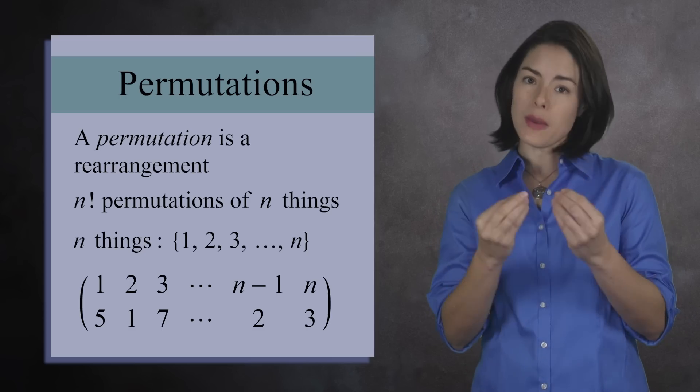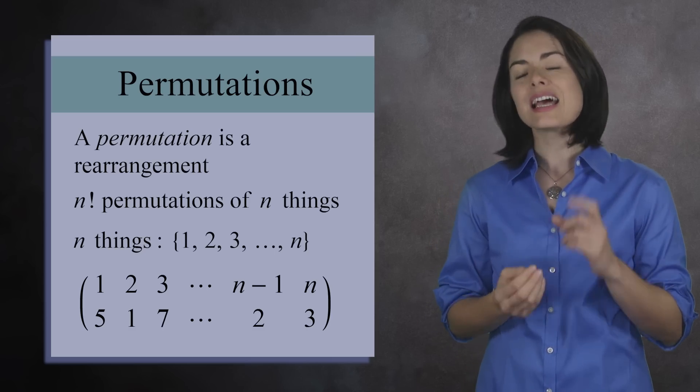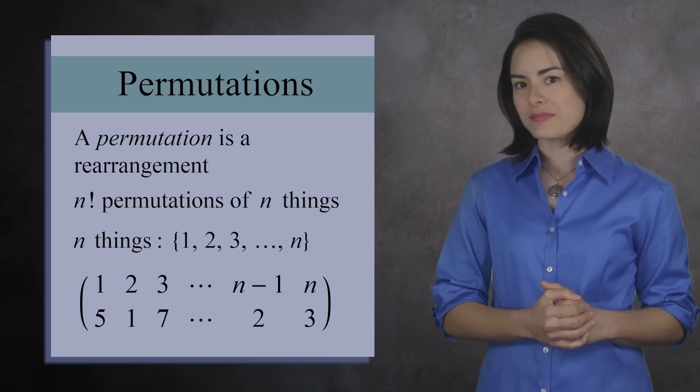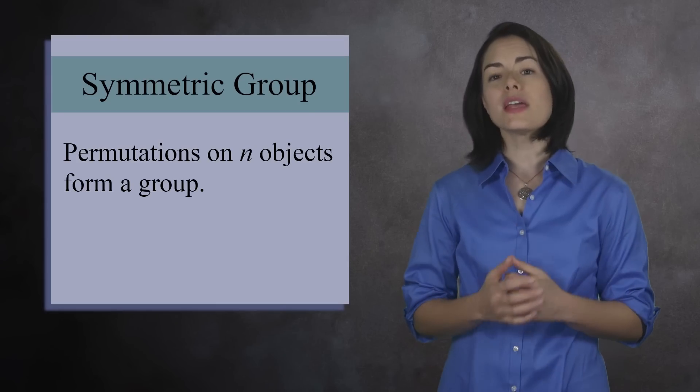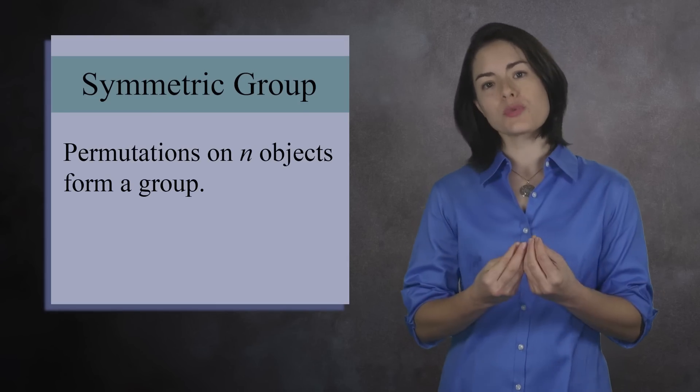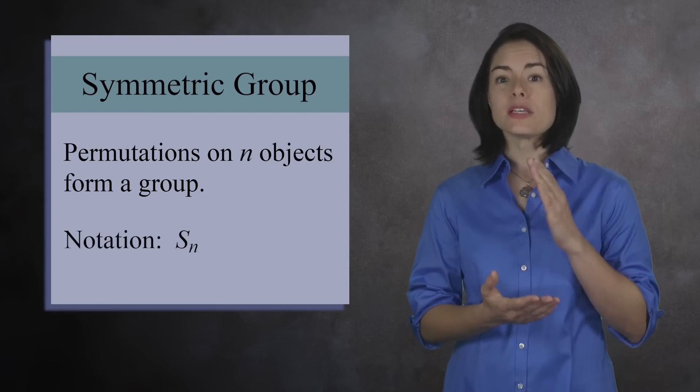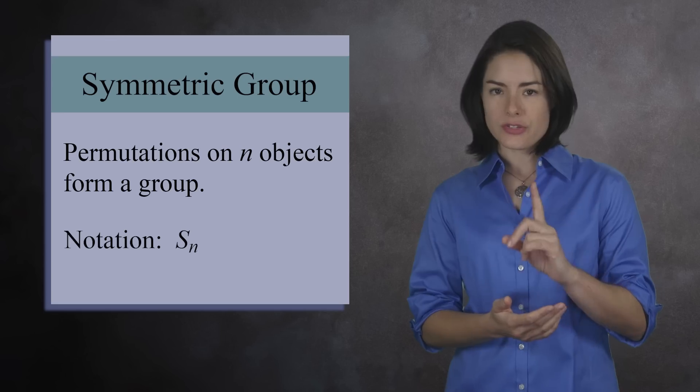Today, we'll learn a more compact way to write a permutation, cycle notation. The permutations of n objects can be made into a group which we call the symmetric group, and we denote it by Sn. Here's how it works.